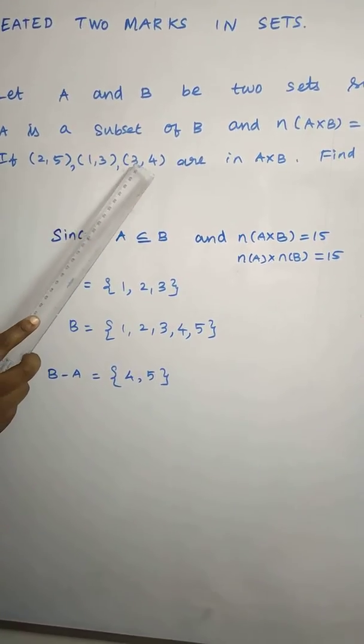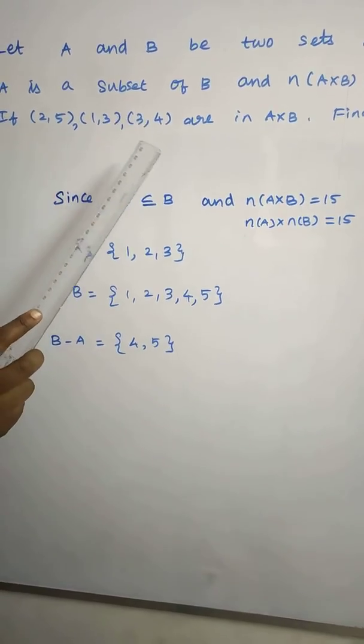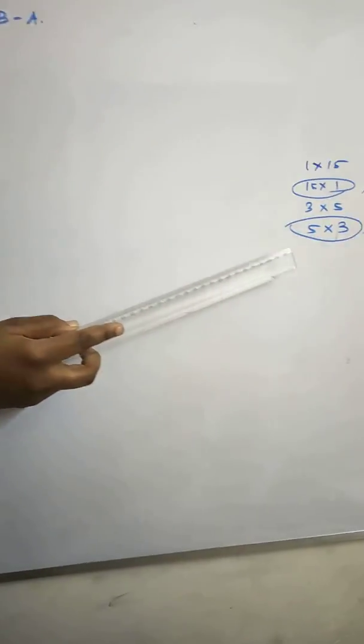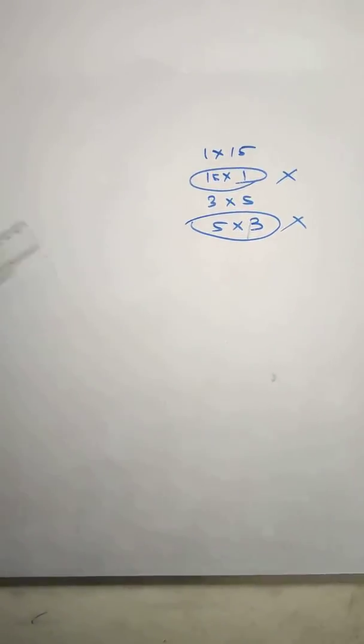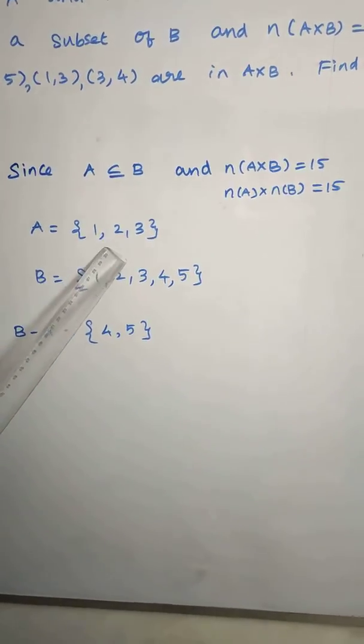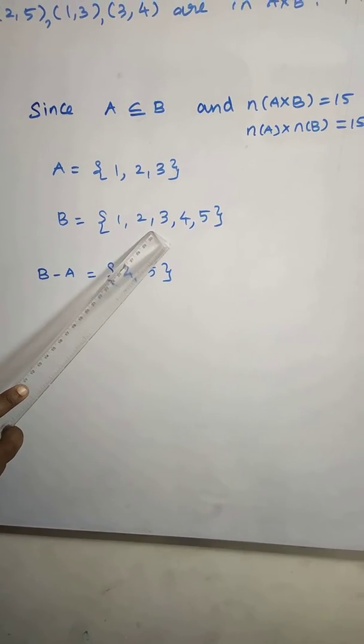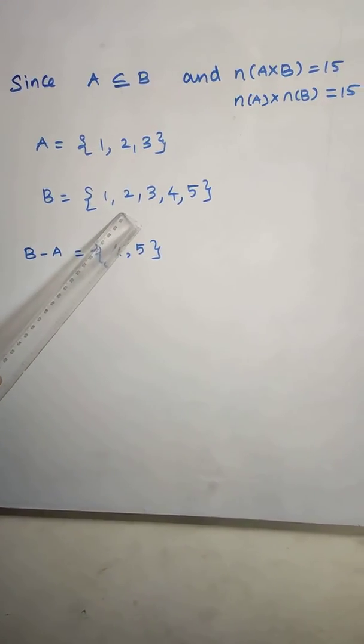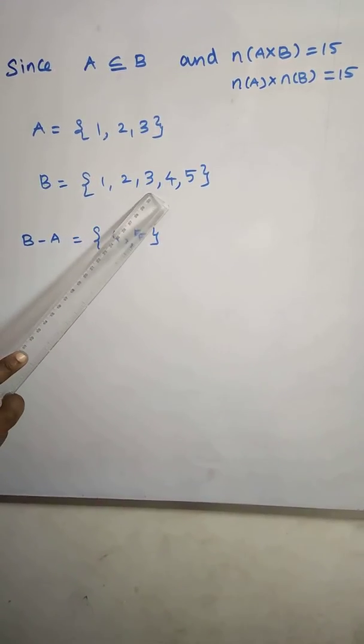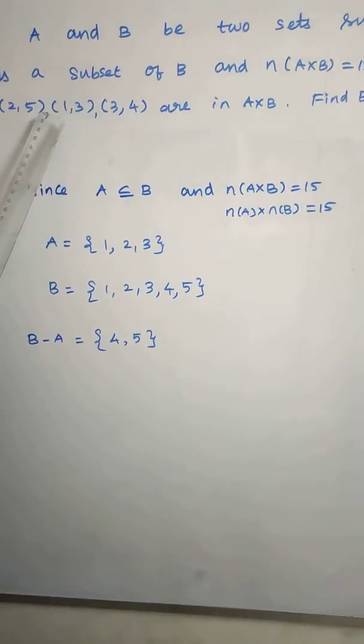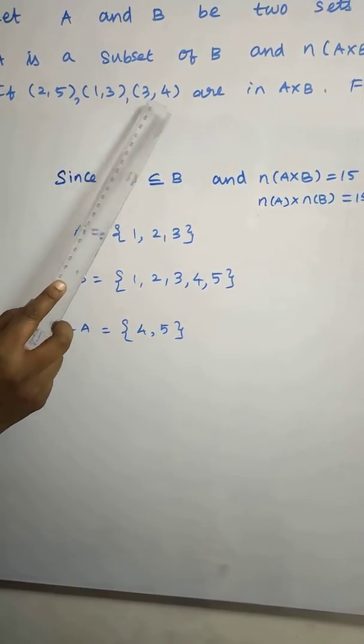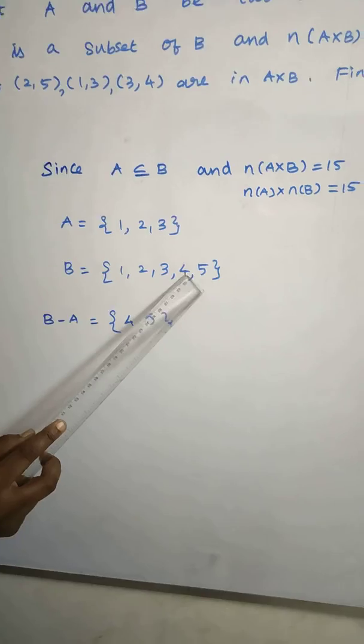The first number is 2, then 1, then 3, so A already has three elements. So the possibility is 3 into 5. Since A is a subset of B, A contains 3 elements: 1, 2, 3 are the elements. B has 5 elements, so the additional elements are 4 and 5.